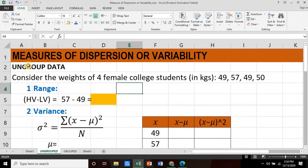Let's talk about ungrouped data. So this is a simple example. Consider the weights of four female college students in kilograms. We have 49, 57, 49, and 50. So to take the range, simply get the difference of the highest value and lowest value. That is 57 minus 49. The value would simply be 8.